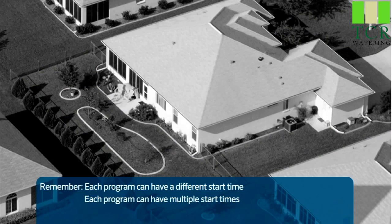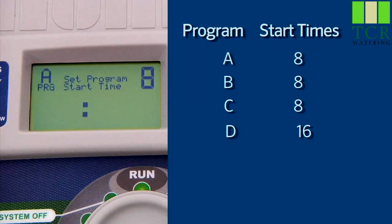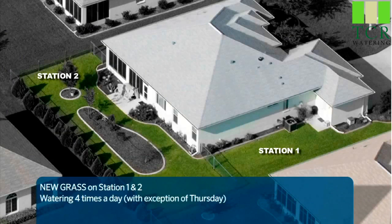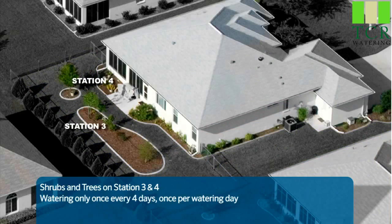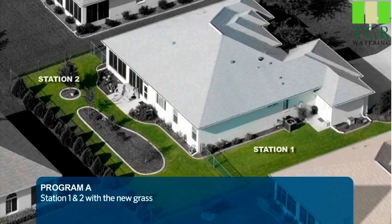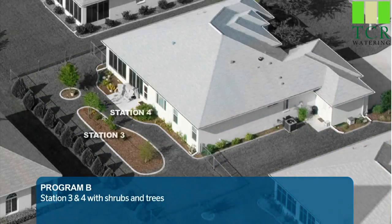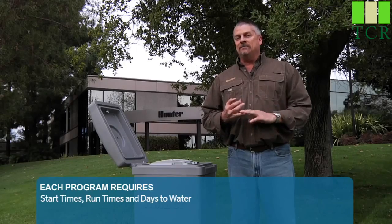You can set multiple start times for each program, which will cause the program to run more than once. Programs A, B, and C can have up to eight start times per day, and program D can have up to 16 start times. Remember that each start time causes all the stations in that program to run again. For example, if you have two newly seeded zones — stations one and two — you may need to water them daily, four times a day, with the exception of Thursday which is your mowing day. You might also have two zones with trees that need watering only every four days, once per watering day. Therefore, you'd divide these four stations into two programs: Program A with stations one and two for new grass, and Program B with stations three and four for the trees. Each program requires at least three ingredients: start times, run times, and days to water.